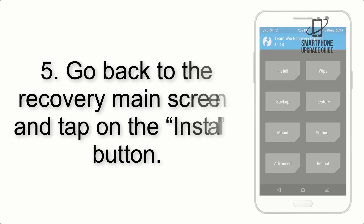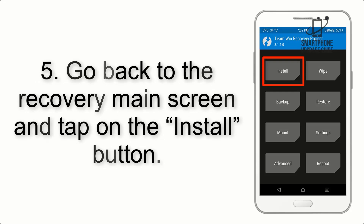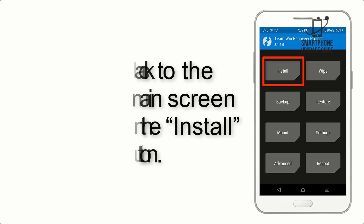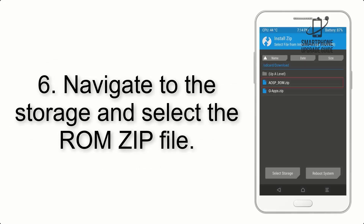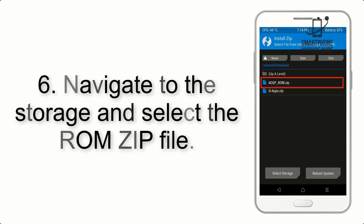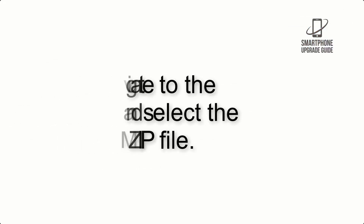Step 5: Go back to the Recovery main screen and tap on the Install button. Step 6: Navigate to the Storage and select the ROM ZIP file.